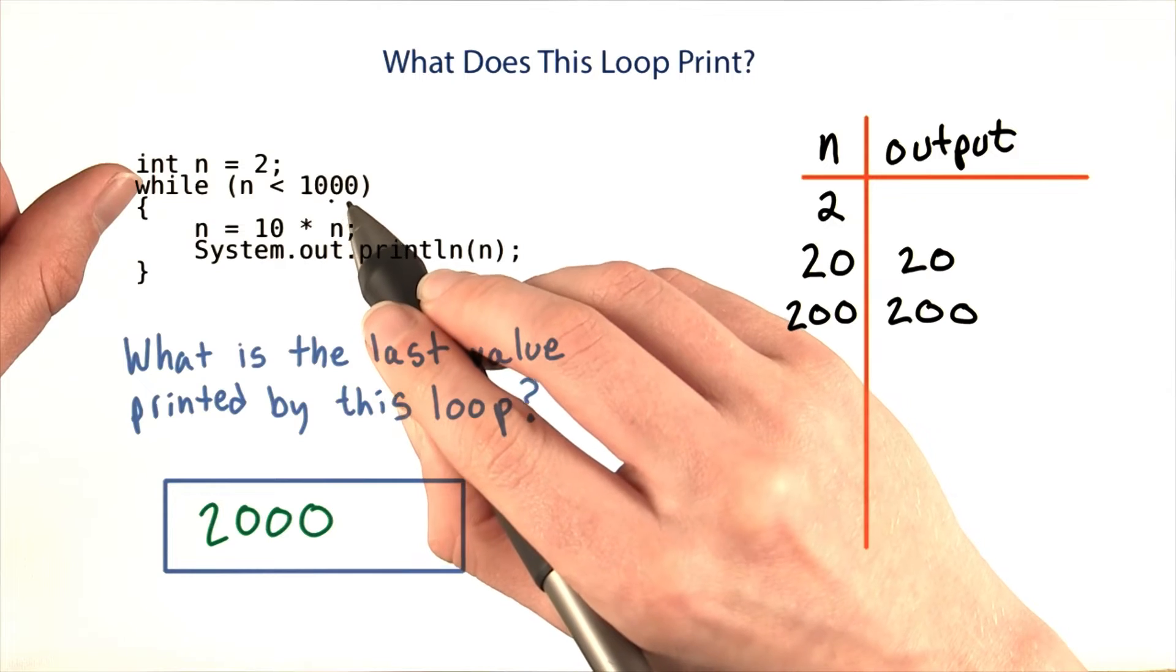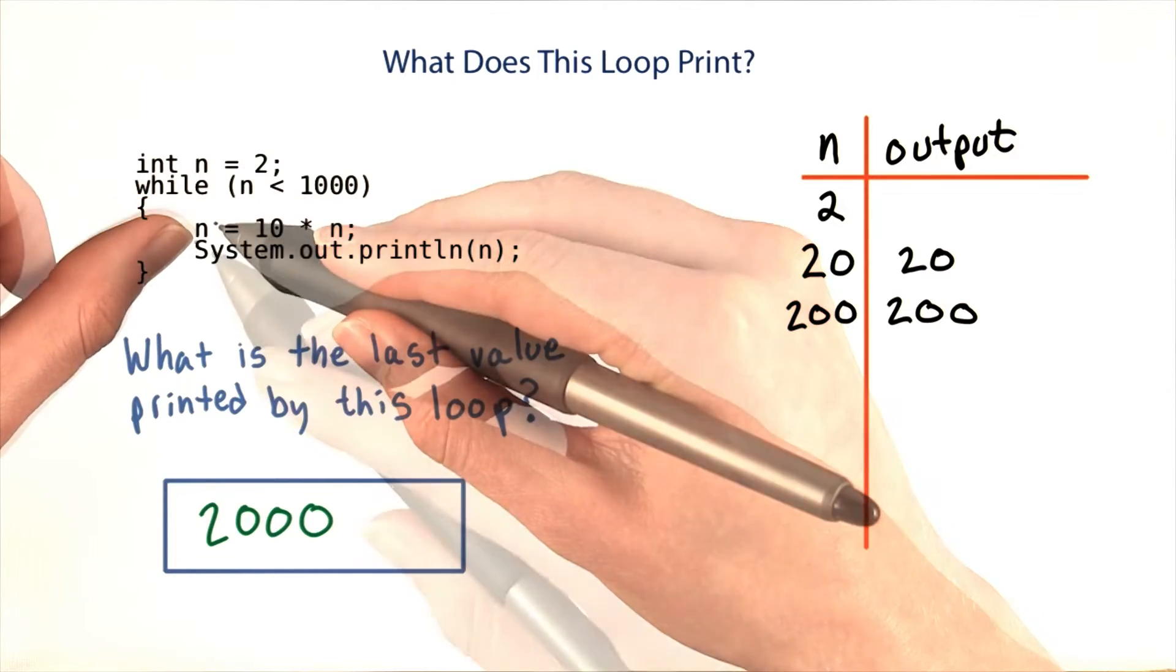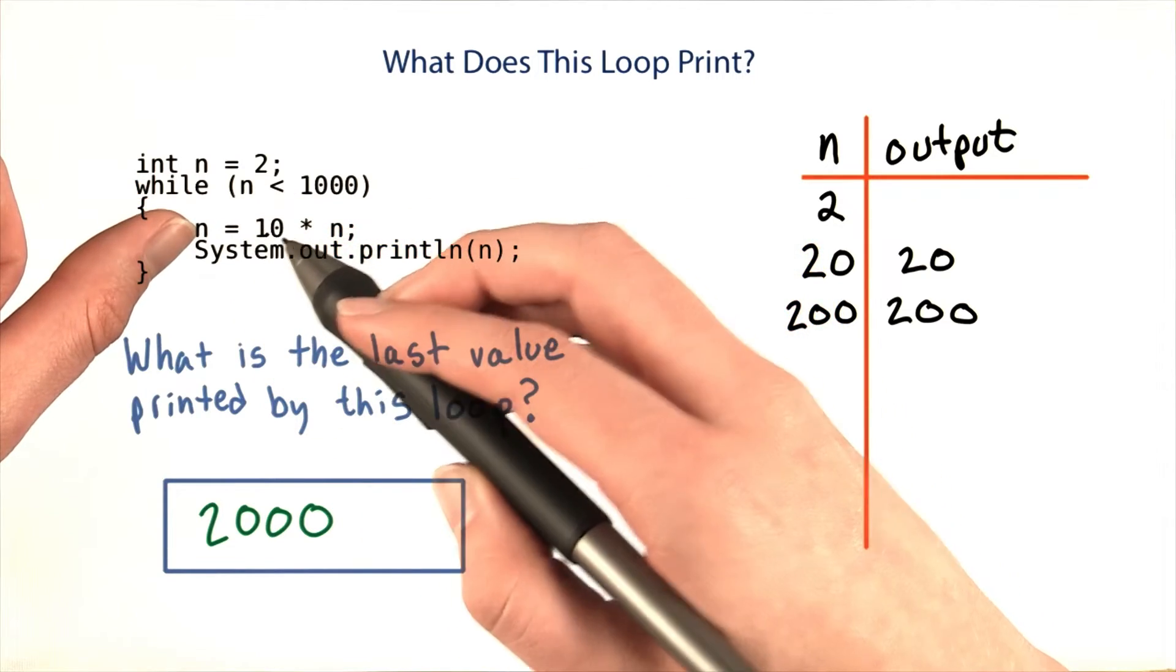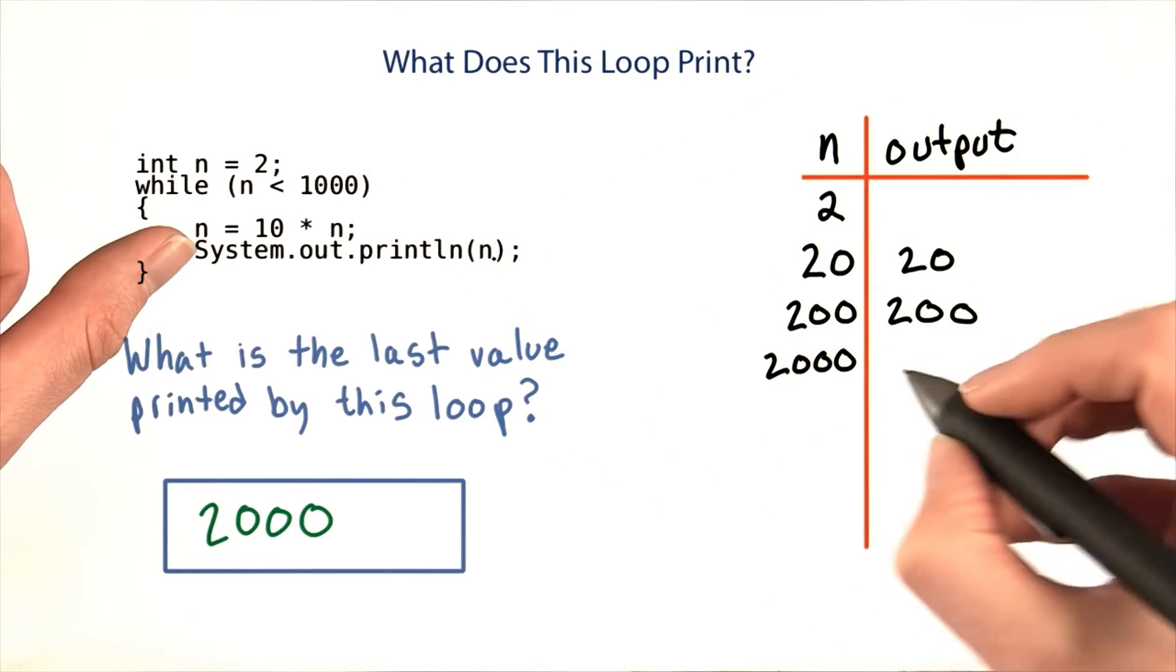200 is less than 1,000, so we'll repeat the loop again. I'll set n to 10 times 200, or 2,000, and then print 2,000.